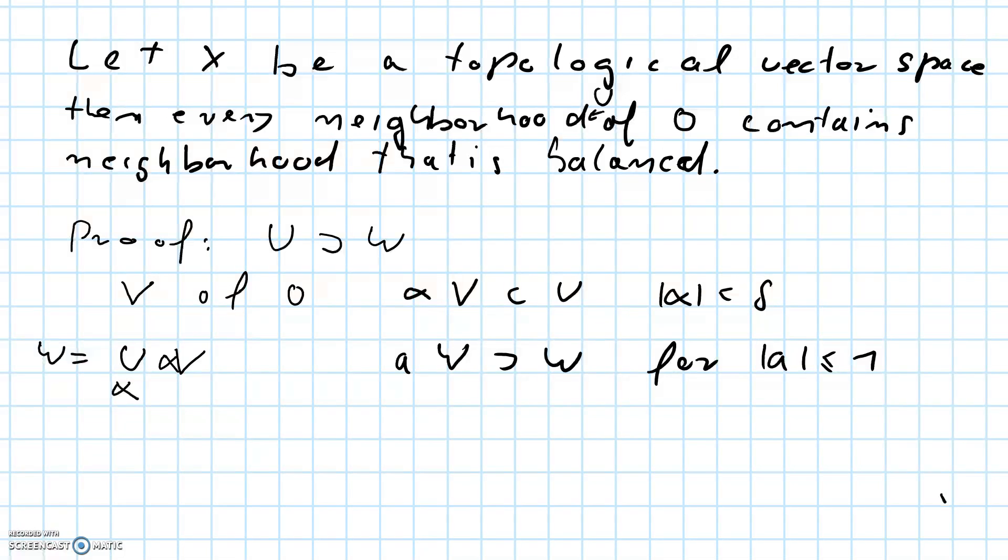So let's pick an arbitrary element of w. This has the form some alpha times some element of v. Let's call it small v.